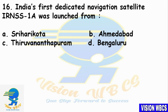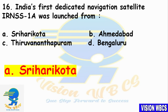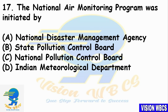Question 16: India's first dedicated navigation satellite IRNSS-1A was launched from? Option A — Sriharikota. Option B — Ahmedabad. Option C — Thiruvananthapuram. Option D — Bengaluru. The right answer is Option A: Sriharikota. IRNSS-1A, India's first dedicated navigation satellite, was launched in 2013.